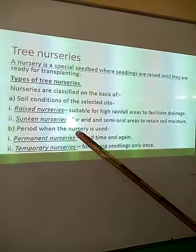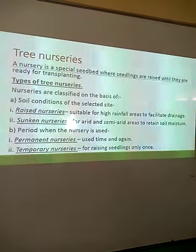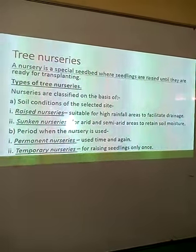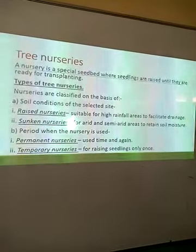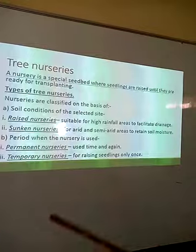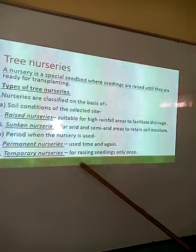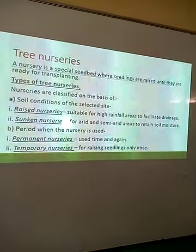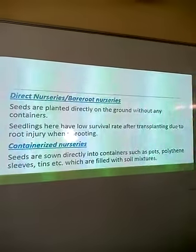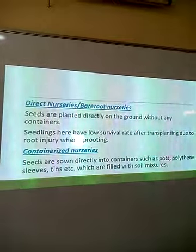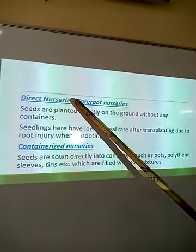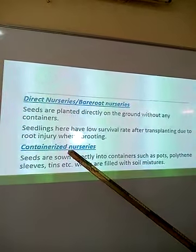Based on the period when the nursery is used, we have permanent nurseries and temporary nurseries. Permanent nurseries are used time and again as a place where tree seedlings are raised. Temporary nurseries are used for raising seedlings for a very short period of time, probably only once. Based on this and also on the surface on which the seeds are sown, we can have direct nurseries or containerized nurseries.